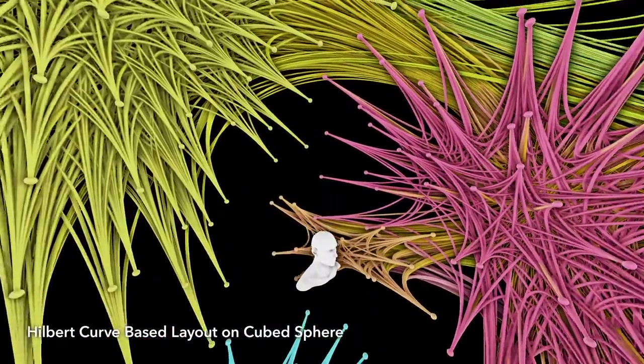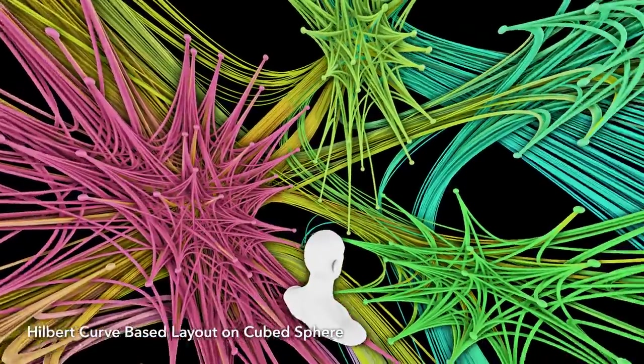Mapping a layout onto the faces of a cube and then projecting that as a cubed sphere produces an omnidirectional layout.